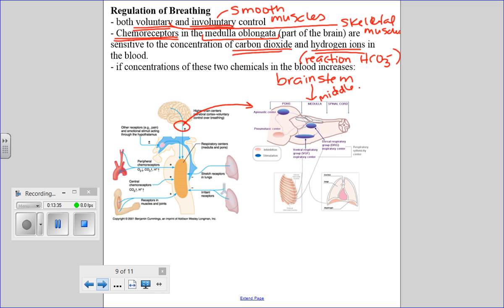So what happens if the concentrations of these two chemicals in the blood increases? Well, some things are going to be stimulated. Now there will be some other secondary effects in other organ systems. We're going to focus on the respiratory ones.